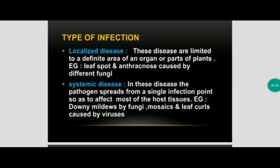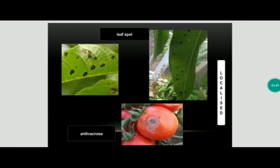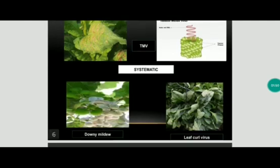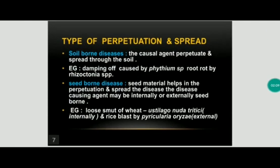Examples of systemic disease include downy mildew caused by fungi, mosaic virus, and leaf curl virus. Examples of localized disease include leaf spot in mango and anthracnose in tomato. Examples shown for systemic disease include tobacco mosaic virus, a picture of the tobacco mosaic virus, downy mildew, and leaf curl virus.